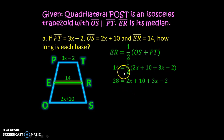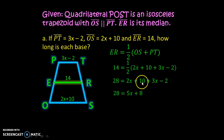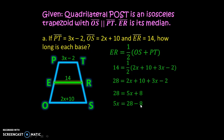Multiplying both sides by 2: 14 times 2 equals 28. Expanding the right side: 2x plus 10 plus 3x minus 2. Simplifying: 2x plus 3x equals 5x, and 10 minus 2 equals 8, giving us 28 equals 5x plus 8.